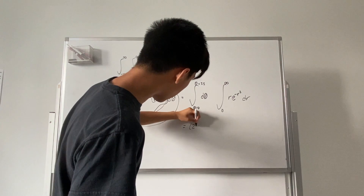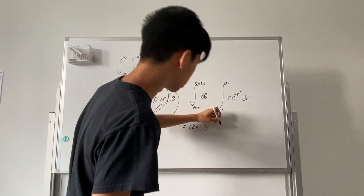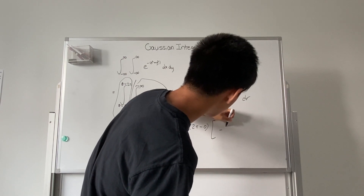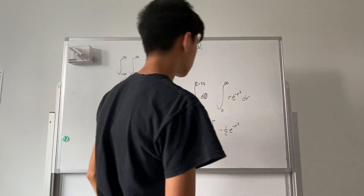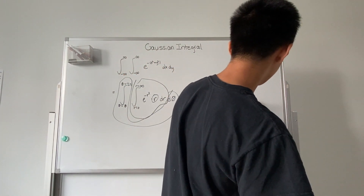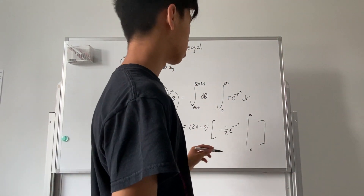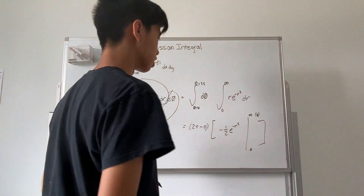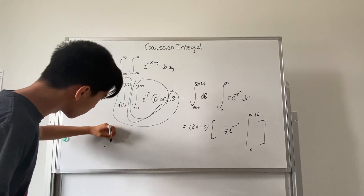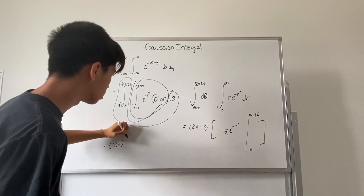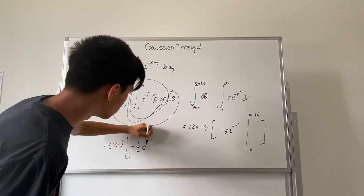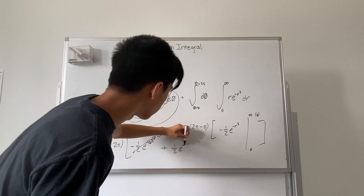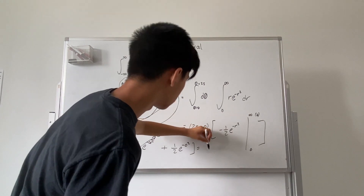So now we have two pi times the integral from zero to infinity of r e to the negative r squared power dr. Evaluating this integral, we get negative one half e to the negative r squared power from zero to infinity. Common calculus conventions would require you to put b here and then set the limit as b approaches infinity, but it's simpler this way. So now we have two pi times negative one half e to the negative infinity squared, which is just zero, plus one half e to the negative zero squared power, which gives us pi.